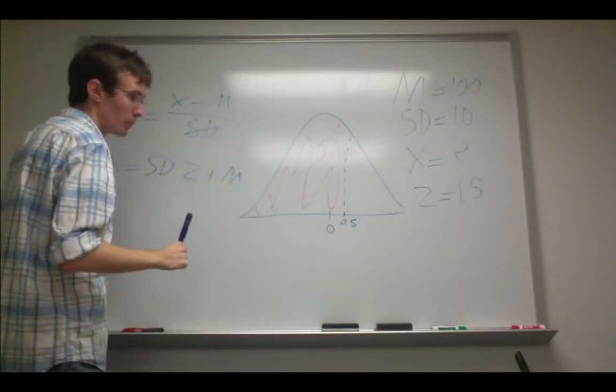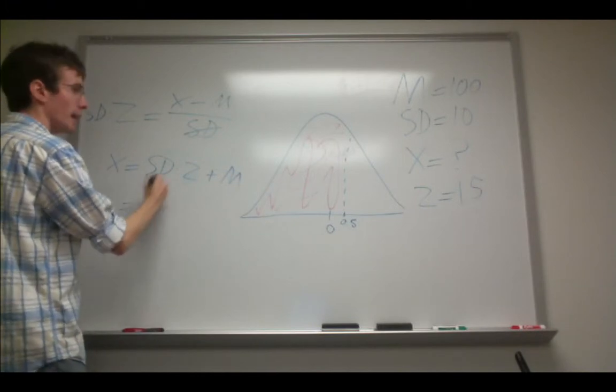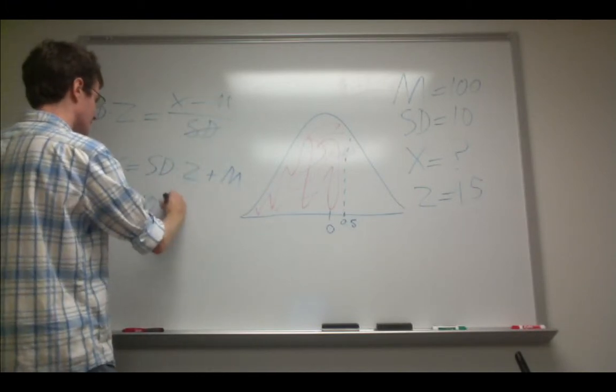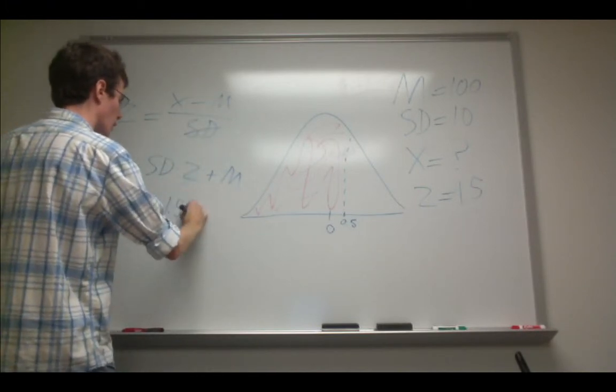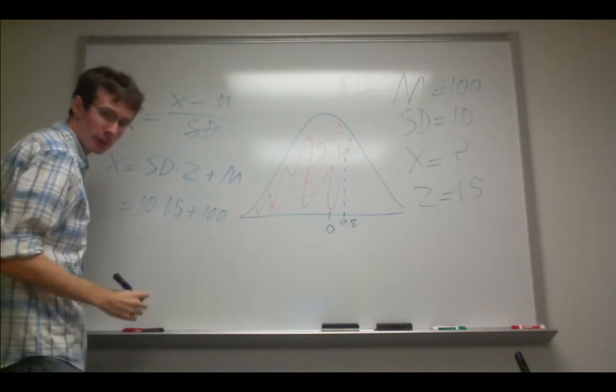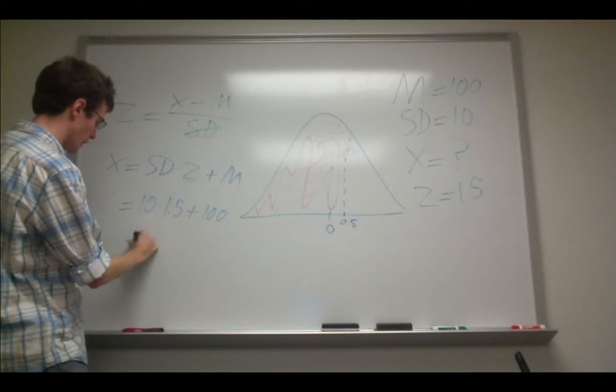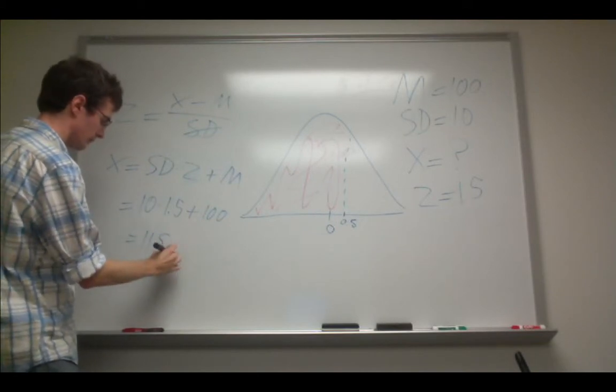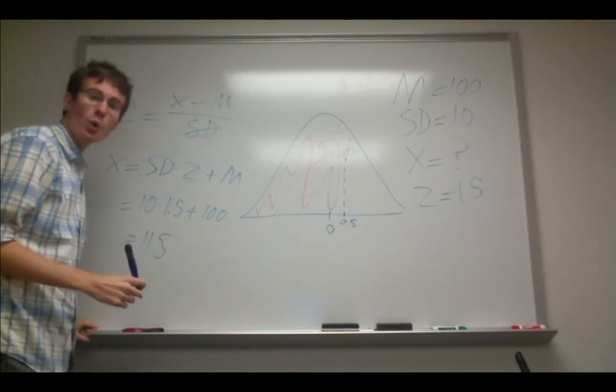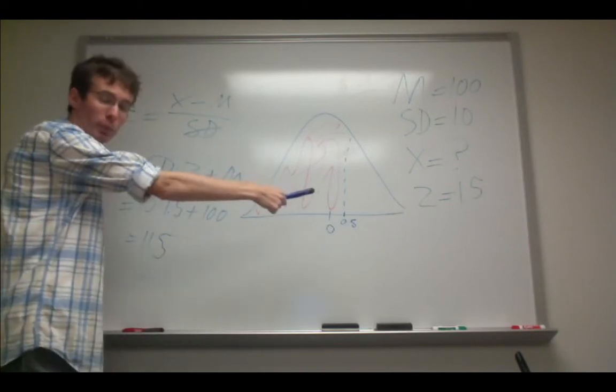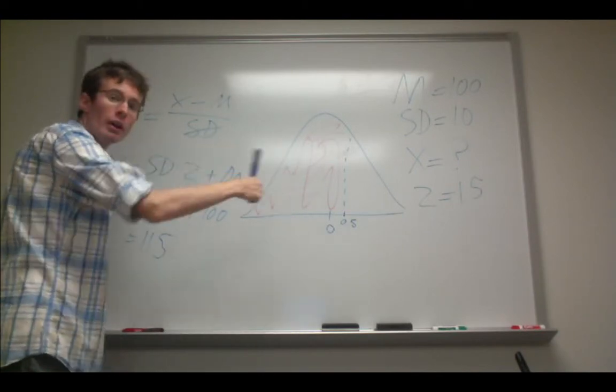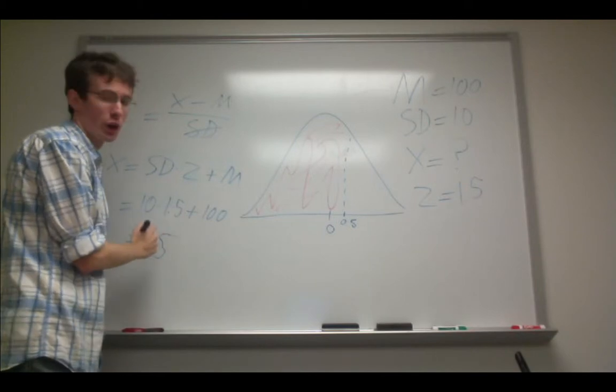So in this example, we can just fill in those numbers right here, and it's going to be 10 times 1.5 plus the mean, which is 100, and that equals 15 plus 100 equals 115. In other words, somebody who has a z-score of 1.5 in this distribution has a raw score of 115.